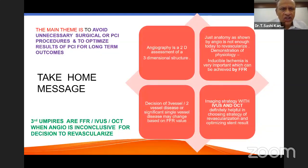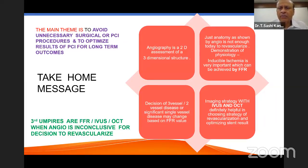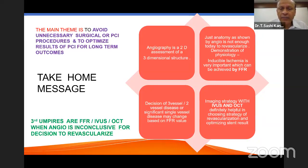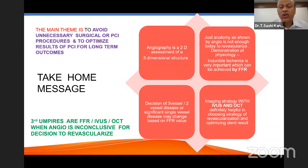The main theme of this presentation is that we have technologies to decide as a third umpire whether one should err on the side of doing an intervention or subject the patient to medical therapy and reassess every six months or annually. One can avoid unnecessary surgical or percutaneous procedures if physiological studies show that medical therapy is as good as intervention. To optimize PCI results and long-term outcomes, the third umpires are FFR, IVUS, and OCT — when angiography is inconclusive for a revascularization decision.